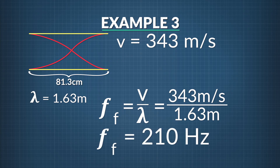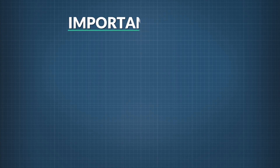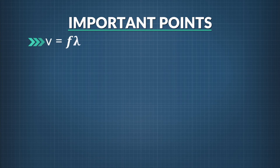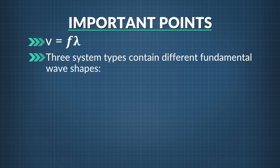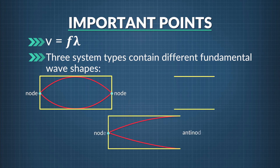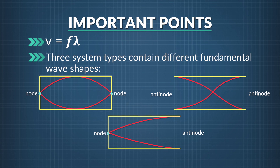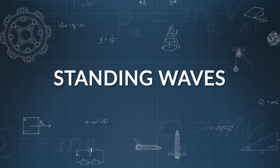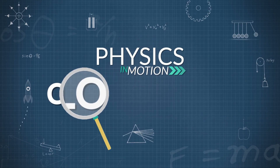That is the fundamental frequency of this standing wave system. There's often more than one way to find the answer to a standing wave question. Keep in mind two important points: remember that the speed of a wave equals its frequency times its wavelength. Second, be aware of the differences between a wave system with two closed ends, one fixed and one open end, and two open ends — each of these three conditions are treated differently. If you understand each one, you will know how to begin solving any standing wave question. That's a closer look at standing waves.